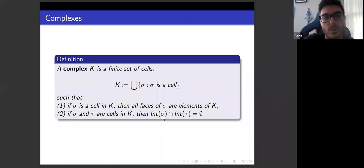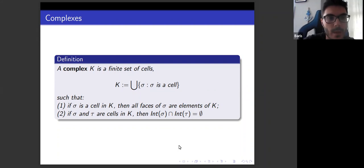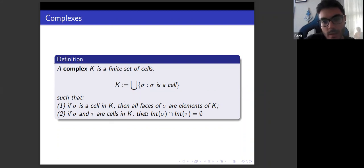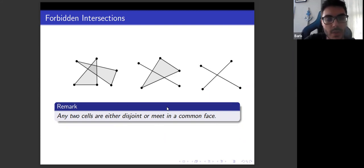Cells will be joined together to form complexes, but we have two conditions. If sigma is a cell in k, then all faces of sigma are elements of k. By faces, we mean lower-dimensional cells in the complex whose vertices are also vertices of sigma. And if sigma and tau are cells in the complex, then the intersection of their interiors must be equal to the empty set. Any two cells are either disjoint or they have to meet in a common face. If you look at the intersection examples shown, none of them satisfies this, so these are not complexes.